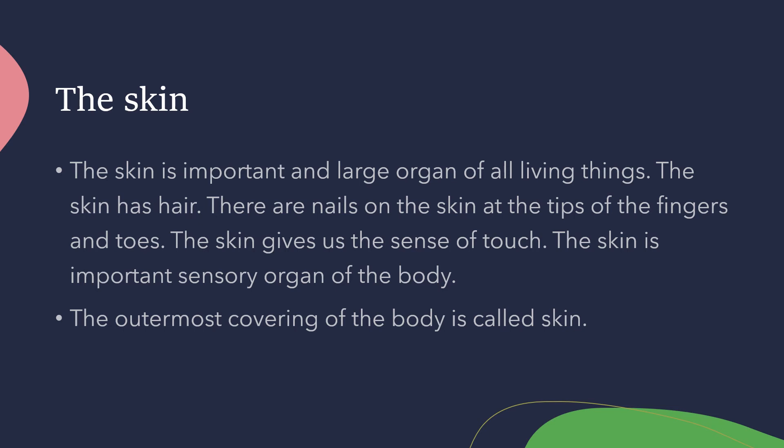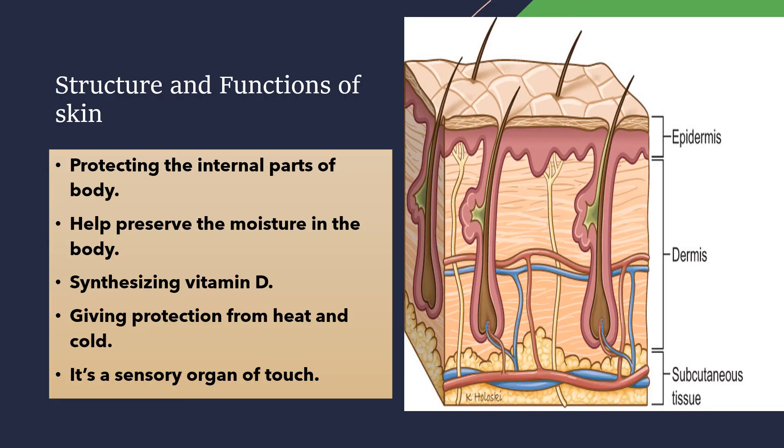The skin is an important and large organ of all living things. The skin has hair, and there are nails on the skin at the tips of the fingers and toes. The skin gives a sense of touch and is an important sensory organ. The outer covering of the body is called the skin, and we will now look at its structure and functions.